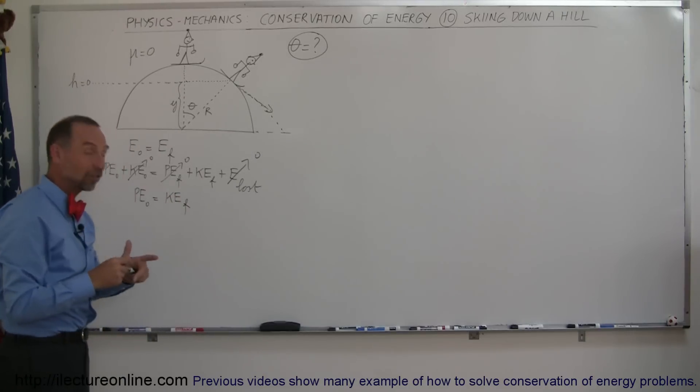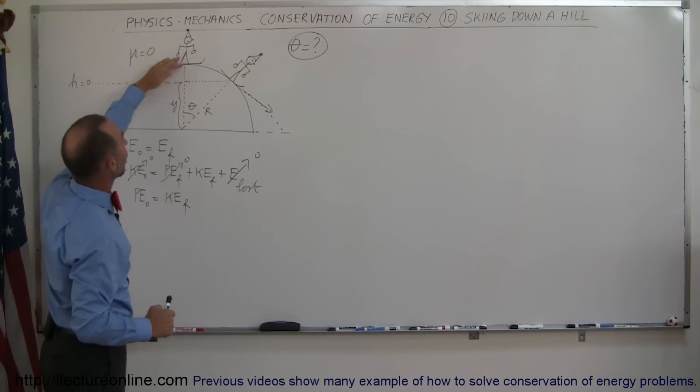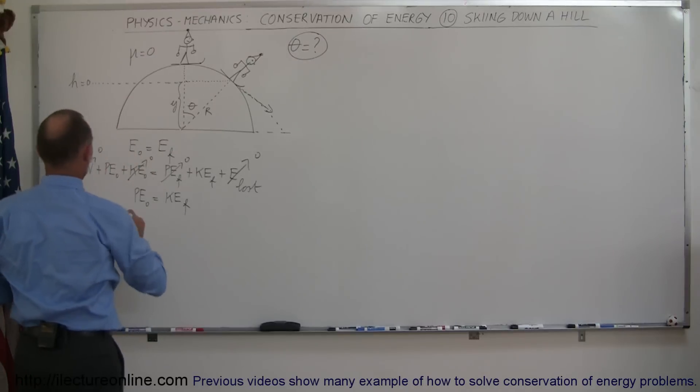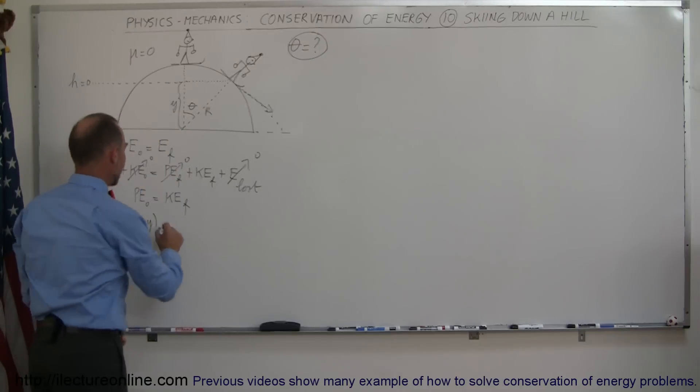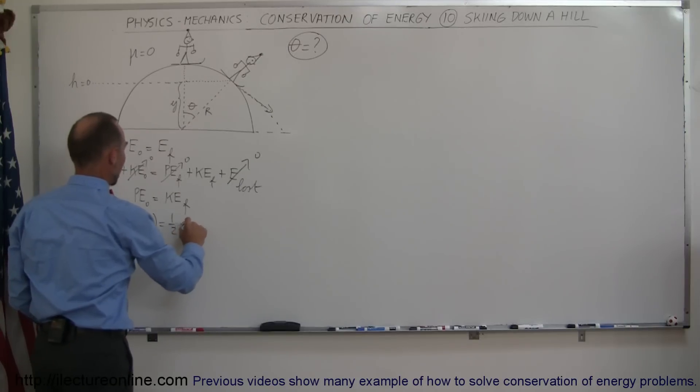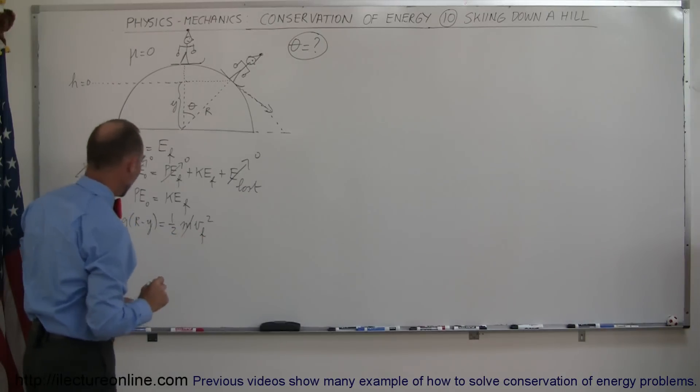Now how much potential energy does he have? Well it's going to be against the ratio here. So it's going to be r, which is the radius of this of the dome, minus y. So this is mg times r minus y, that would be the height relative to the zero height. And this is going to be equal 1 half mv final squared. And of course you see an m on both sides, so the m cancels. We do not need to know the mass.